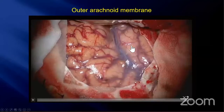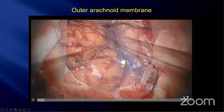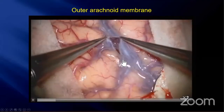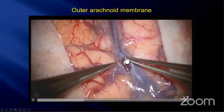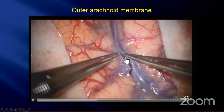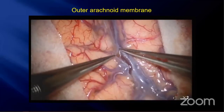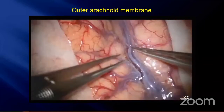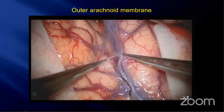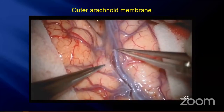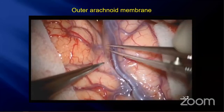Here we see the right frontal and temporal lobe. It is easy to hold and split the outer arachnoid membrane. This is an easy, quick and safe technique when we start to open the sylvian fissure.